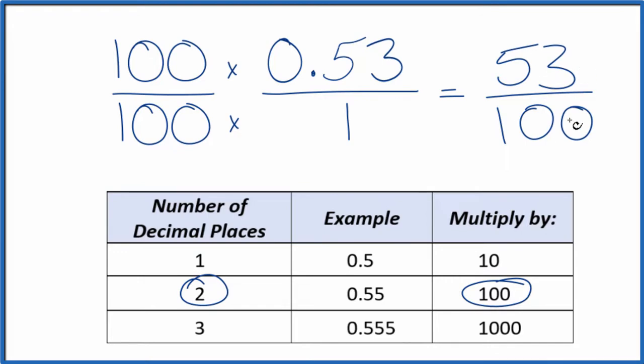We can't simplify this number any further here. So that's our fraction. If you divide 53 by 100, you'll end up with the decimal 0.53. This is Dr. B. Thanks for watching.